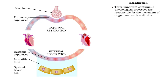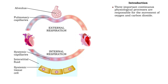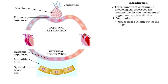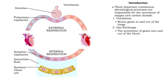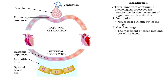Three important continuous physiological processes are responsible for the movement of oxygen and carbon dioxide. Ventilation moves gases in and out of the lungs. Gas exchange is the movement of gases into and out of the blood.